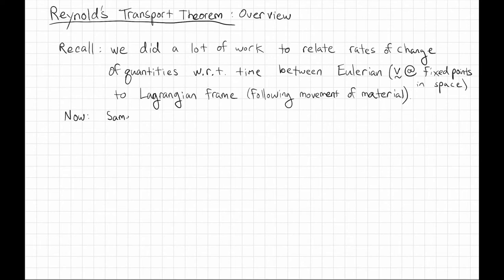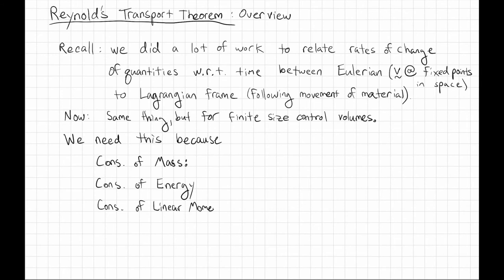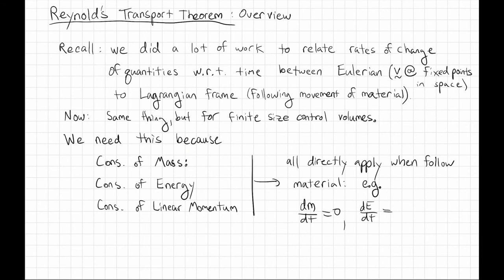So now what we need to do is the complement of that for control volumes. Instead of doing things at a point, we need to do the same thing but for finite-sized control volumes. And again, the reason we need this is because the rules of the universe are written following a fixed amount of material. So conservation of mass, conservation of energy, conservation of linear momentum - those all directly apply when you're following material.